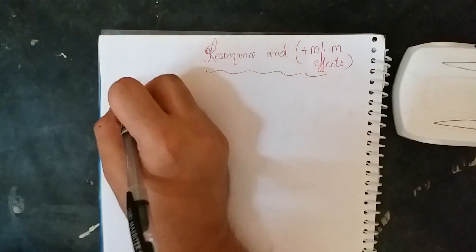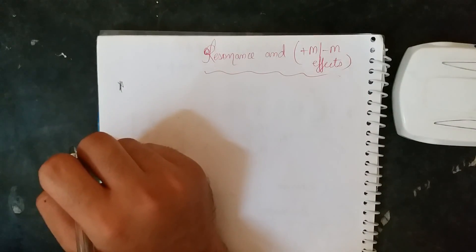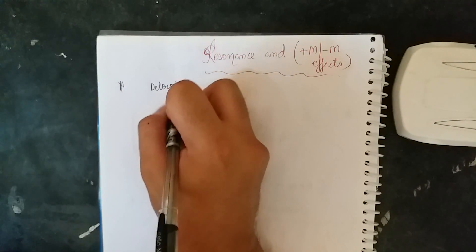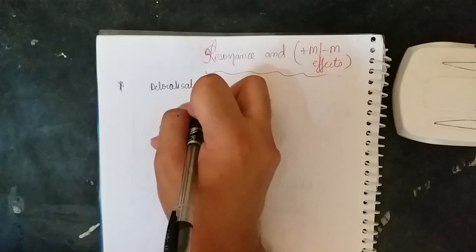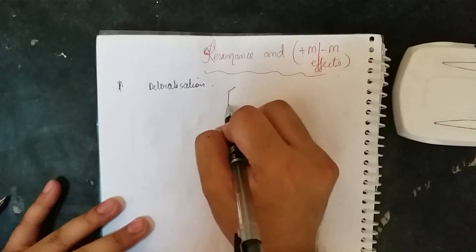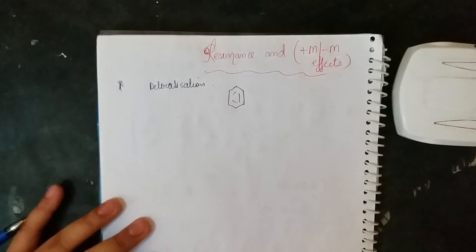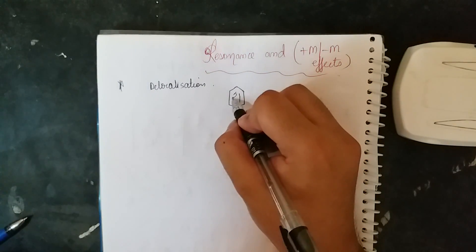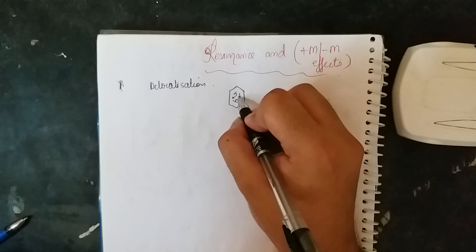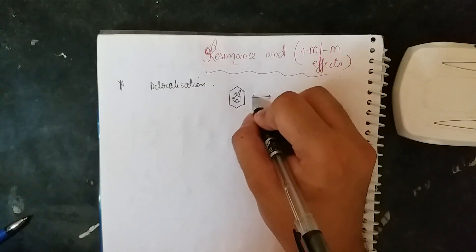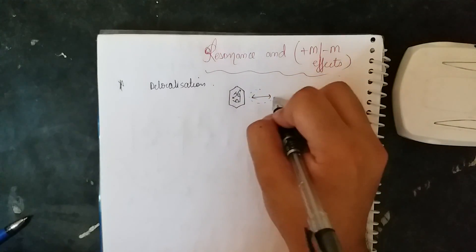Let us begin with the basics of resonance. What is resonance? Delocalization of electrons is known as resonance. Let me show you a simple example of how to do resonance. This bond goes here, this bond goes here, and this bond goes here. This arrow is used for showing resonance.